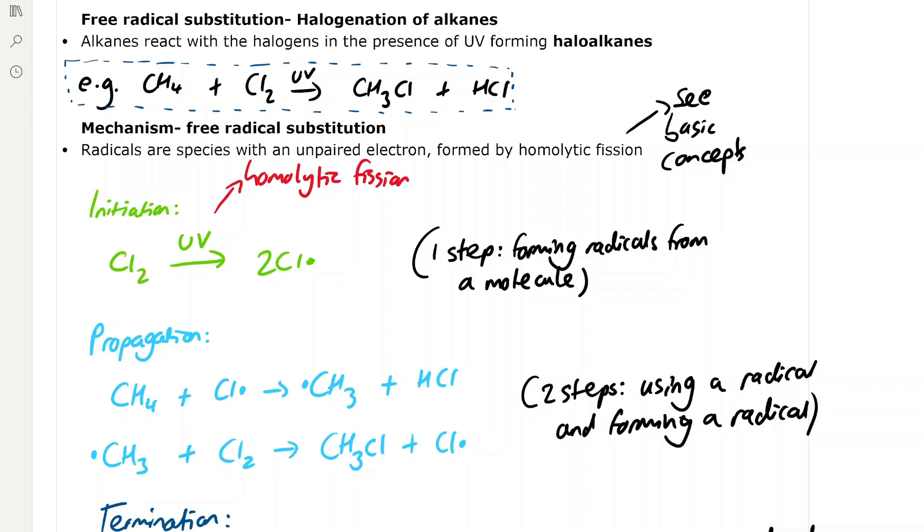It's important to know that radicals are species with an unpaired electron formed by homolytic fission. Homolytic fission is the process by which covalent bonds are broken and one electron goes to each of the bonding atoms to form two radicals which each have an unpaired electron, represented by dots next to the atom.